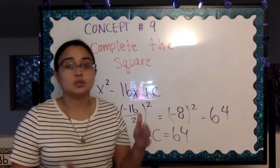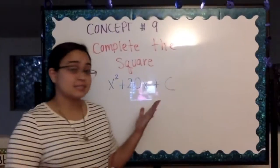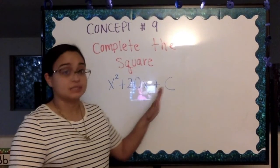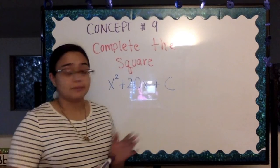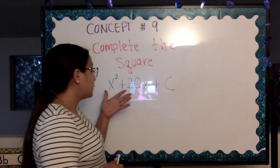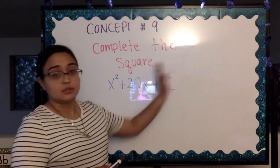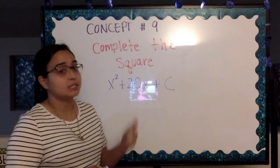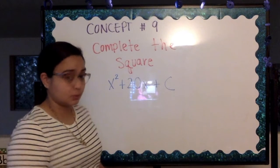Let's go ahead and do one more example. For this example we have x squared plus 20x plus c. So we are going to go ahead and just ignore that part of it and focus here. Our b in this equation is 20, a positive 20.